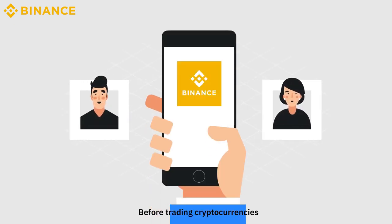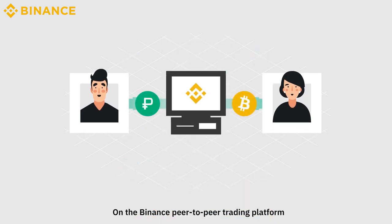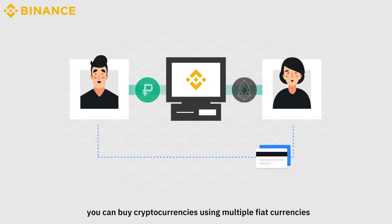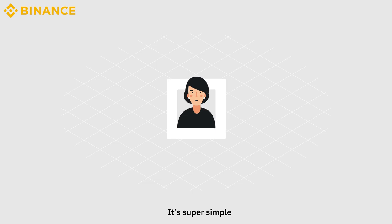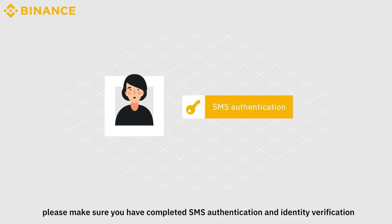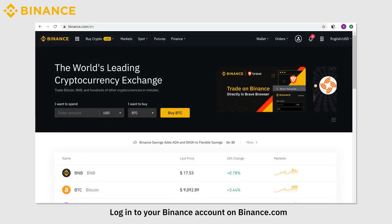Before trading cryptocurrencies, you need to buy cryptocurrencies first. On the Binance peer-to-peer trading platform, you can buy cryptocurrencies using multiple fiat currencies in various payment methods. It's super simple. Before we start, please make sure you have completed SMS authentication and identity verification. Log into your Binance account on Binance.com.